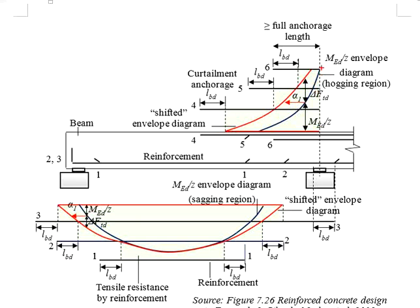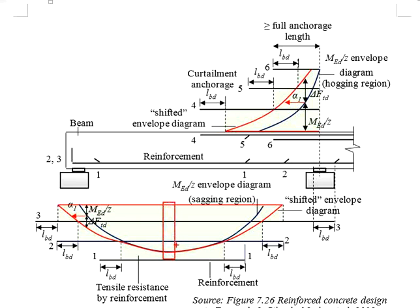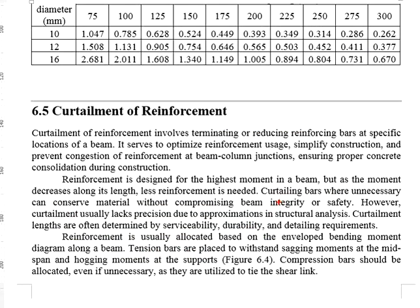Due to the hogging moment at the internal support, you will see a higher tensile force near the internal support. Due to the sagging moment at the mid-span of the beam, you will see a maximum MEd per z at the mid-span. You need to do the curtailment of the reinforcement based on the MEd per z envelope diagram.